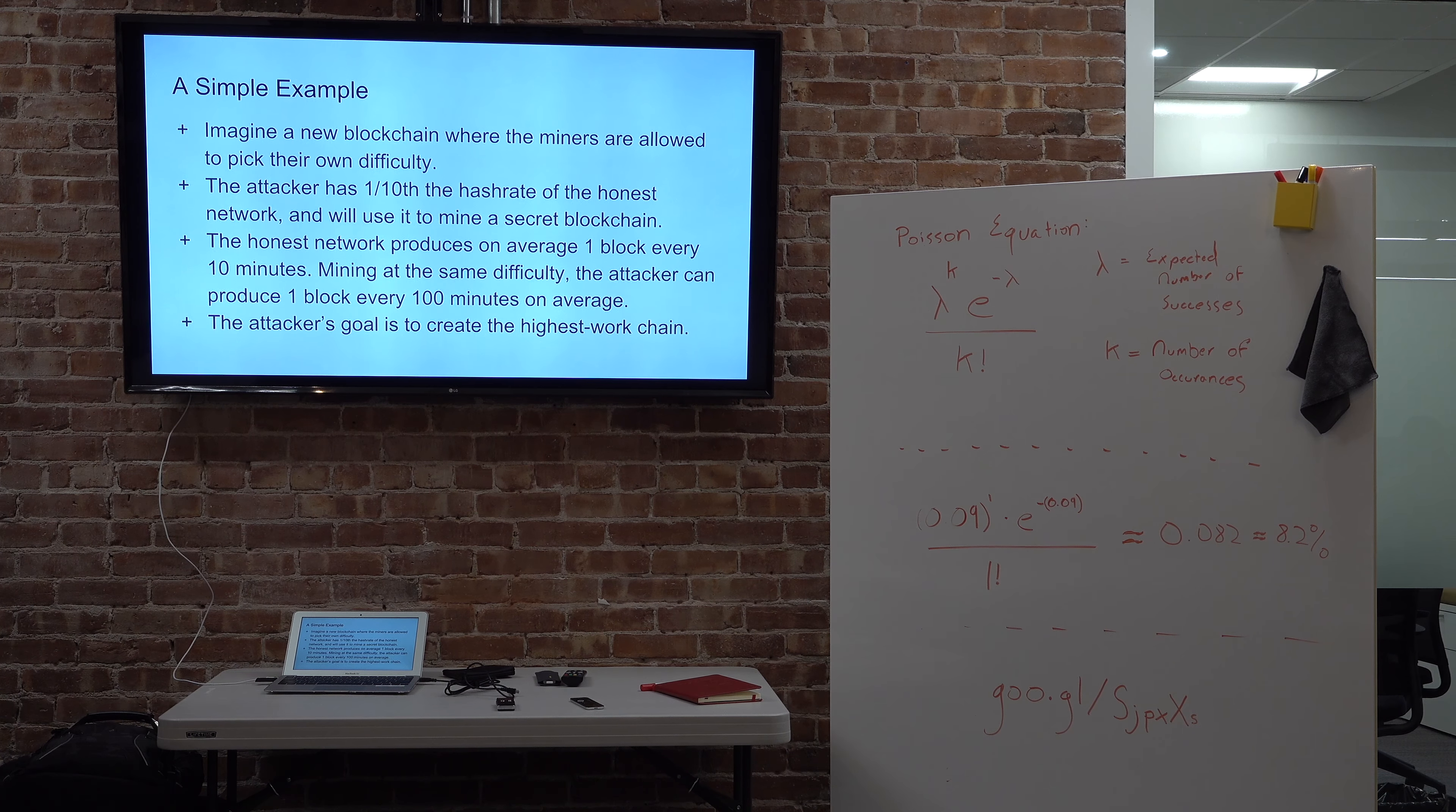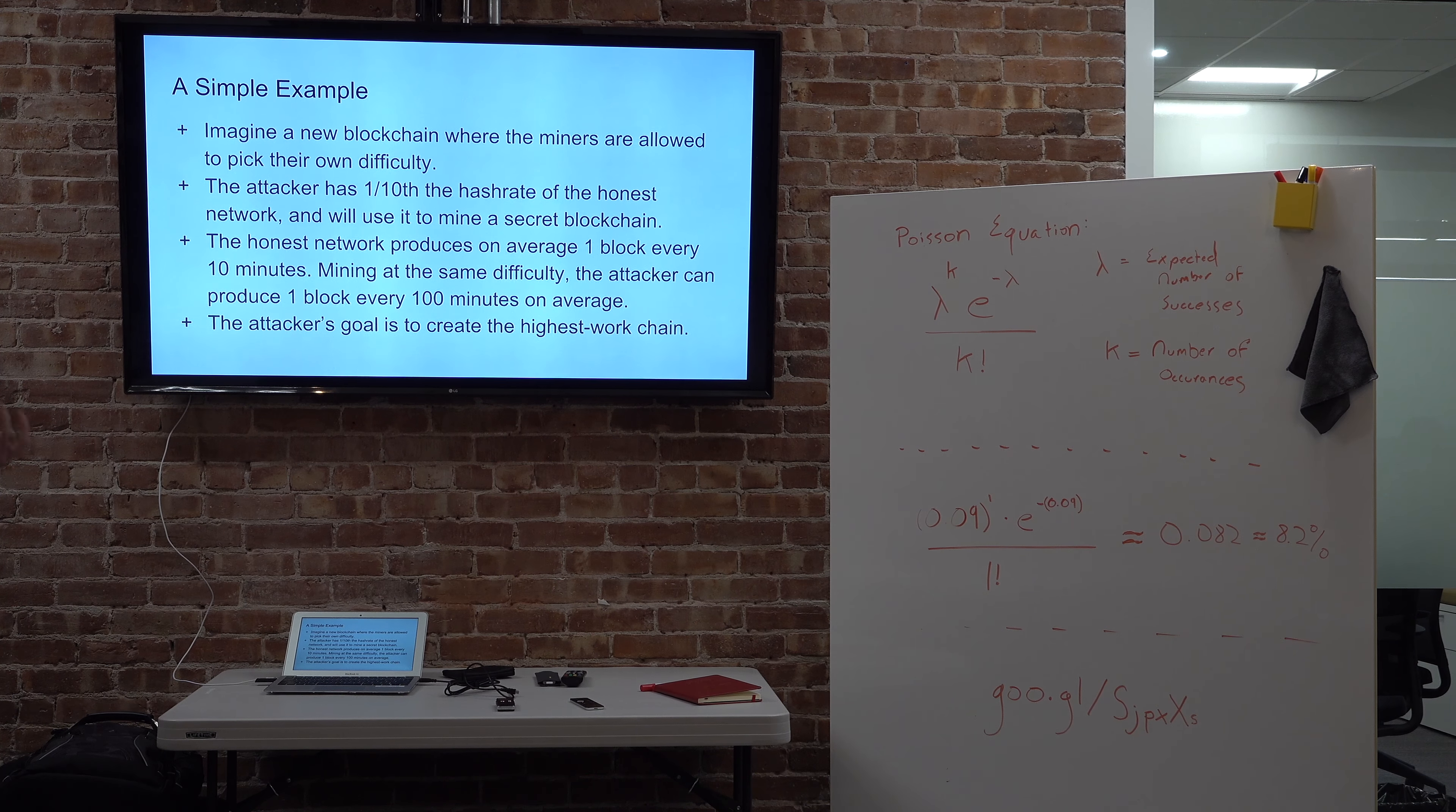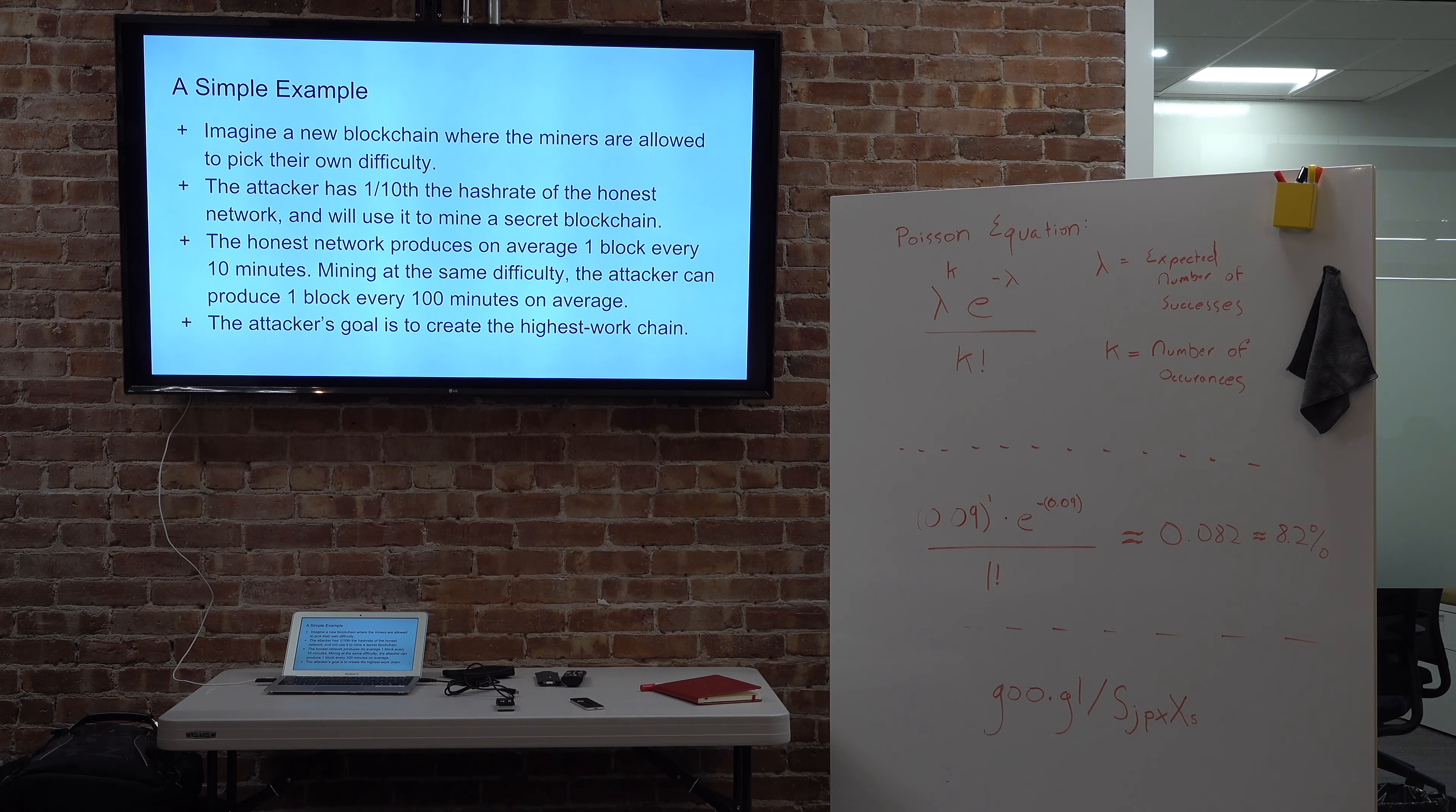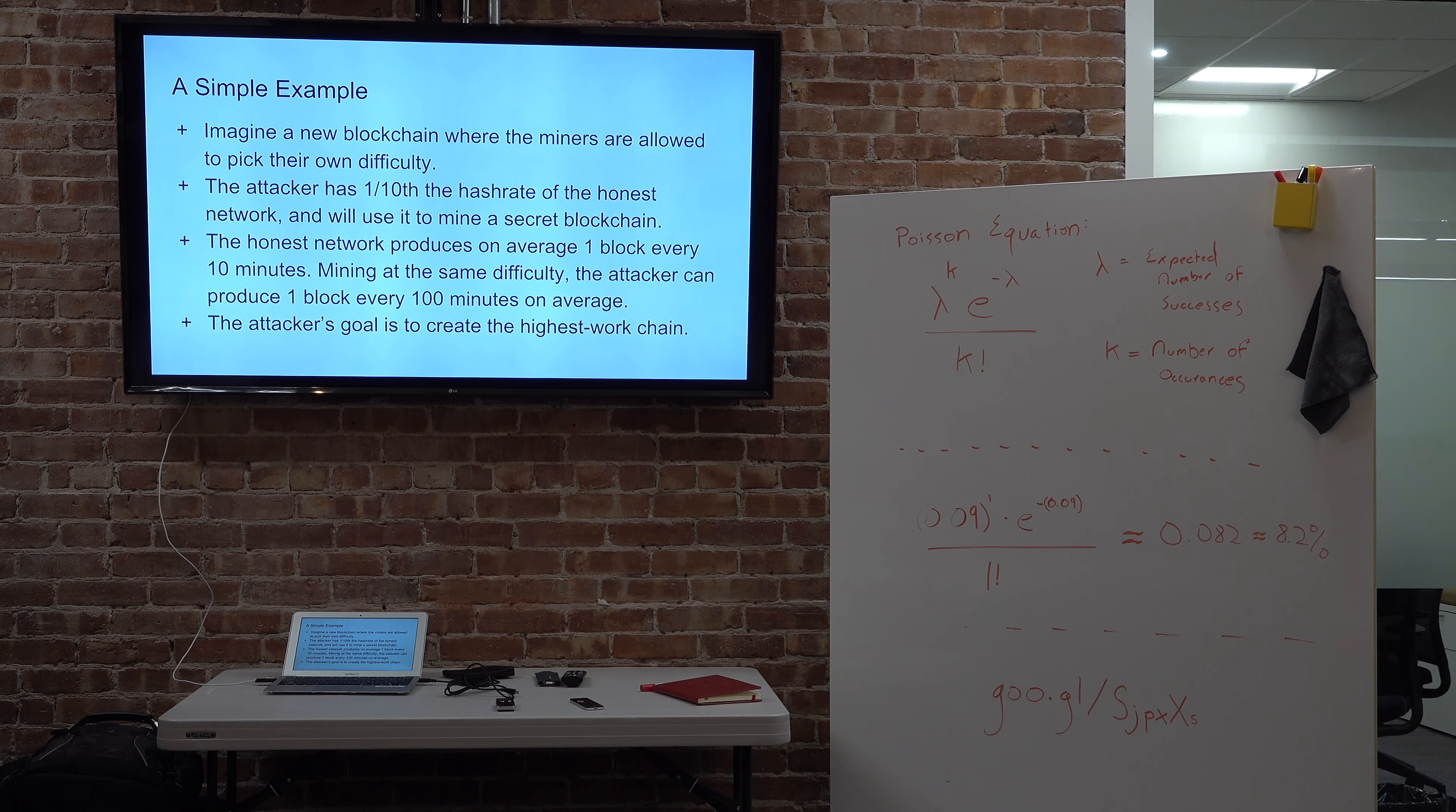So I'm going to set up a scenario. We're going to make a completely new blockchain where miners are allowed to pick their own difficulty. We're going to do that to give our attacker a break and make the math a little bit easier. So the attacker is going to have one tenth of the hash rate of the honest network. If the honest network is doing one block every 10 minutes, then at an equivalent difficulty, the attacker can do one block every 100 minutes. And the attacker is going to be mining on a secret chain. The attacker's goal is to get that secret chain to be the longest slash most difficult chain, even though the attacker only has one tenth of the hash rate. And like I said, we can guarantee we can do this. So the attacker can win.